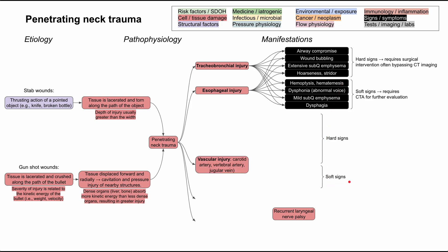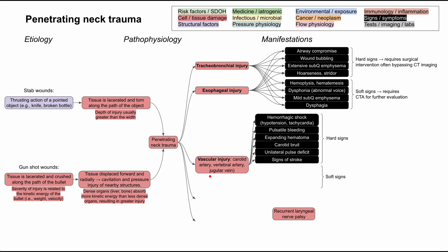The hard signs and soft signs are also evident in vascular injury. There are many blood vessels in the neck — the big ones are the carotid artery and vertebral artery, which supply blood to the brain, and the jugular vein, which brings blood back down from the brain. Hard signs of vascular injury include hemorrhagic shock — hypotension and tachycardia from bleeding — pulsatile bleeding on exam, an expanding hematoma, a carotid bruit, unilateral pulse deficit, and signs of stroke like limb weakness, aphasia, or altered mental status.